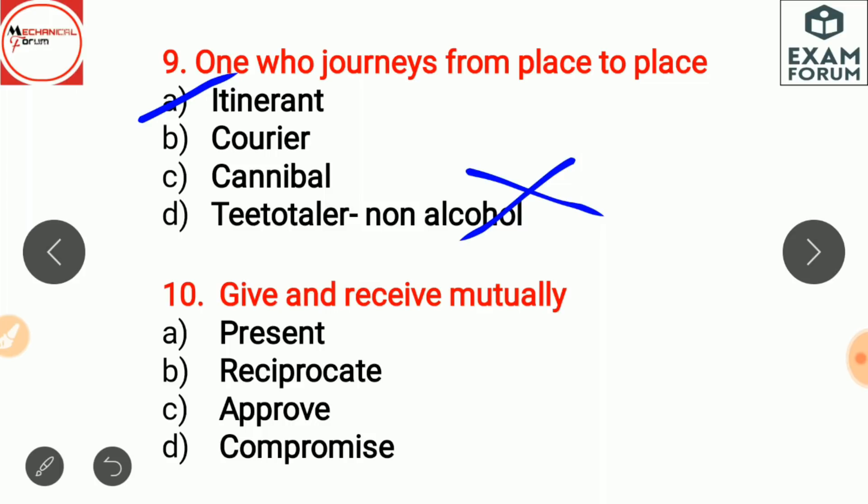Give and receive mutually is reciprocate. Present means something happening now, or a gift given to someone. Approve means to agree formally or to say yes. Compromise is an agreement where each person gets part but not all of what they wanted.